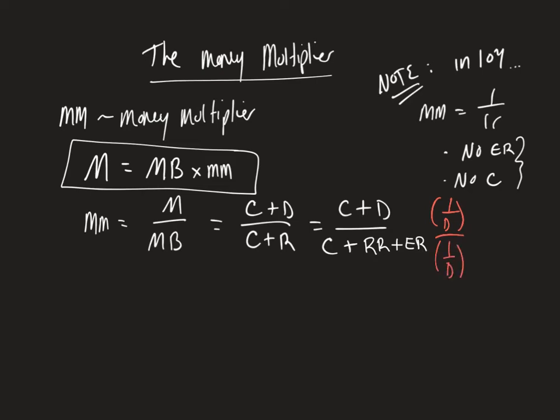So I'm multiplying the top and the bottom by 1 over D, because I want to get this stuff into deposit ratios, which we talked about earlier in this lesson.